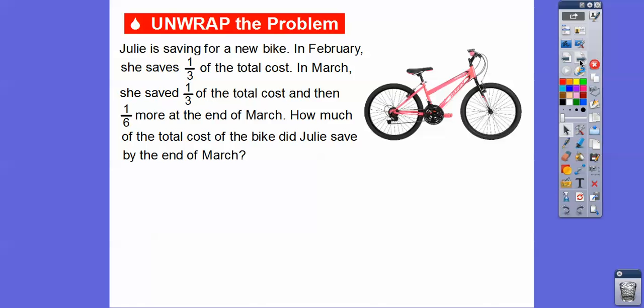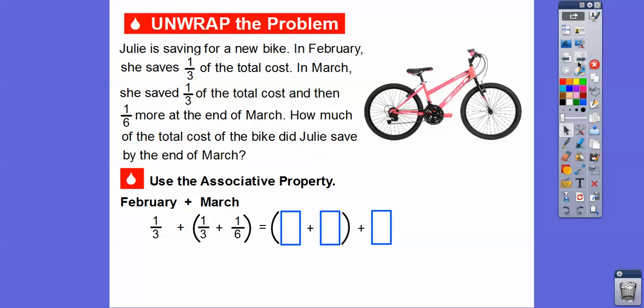Here's an example. Julie is saving for a new bike. In February she saves one third of the total cost. In March she saves one third again and then one sixth more at the end of March. So how much of the total cost did Julie save by the end of March? We're going to add one third plus one third plus one sixth to find the total.